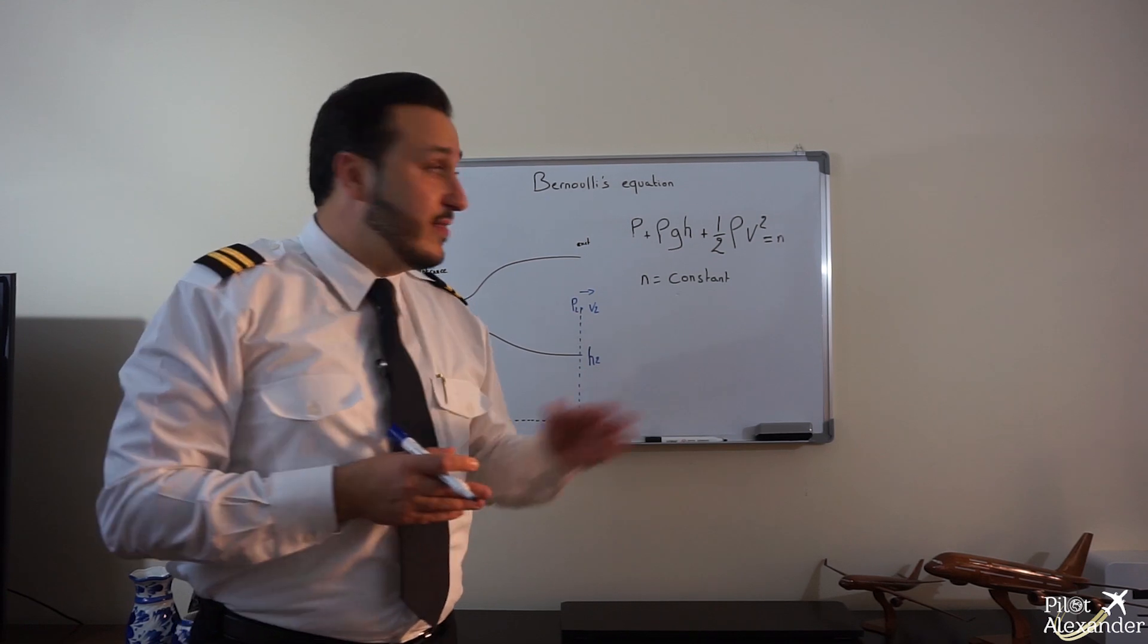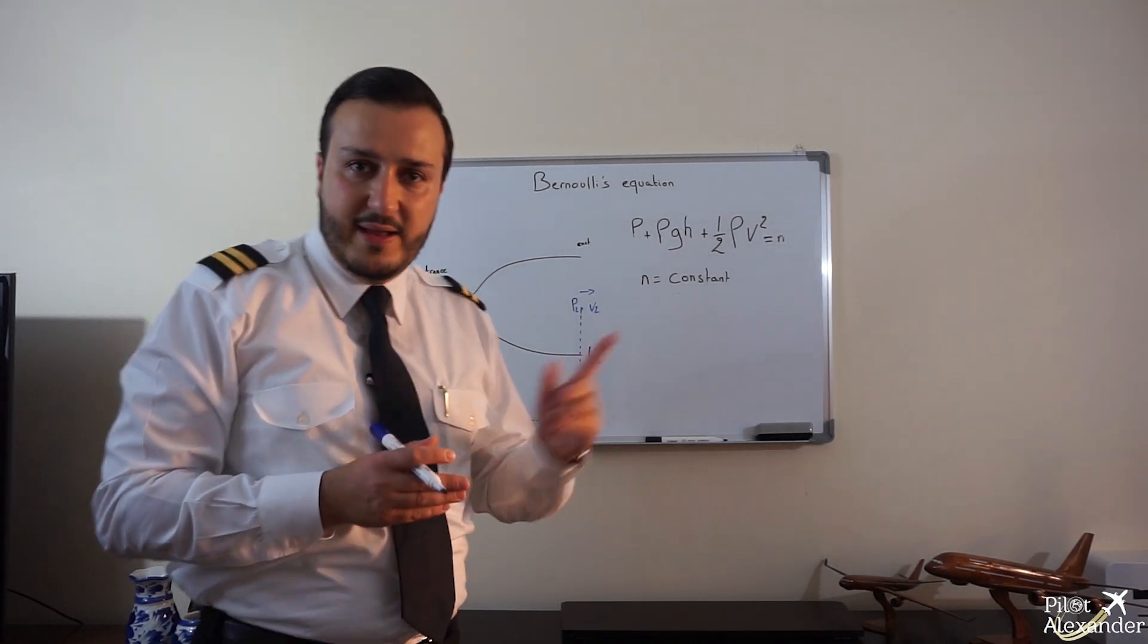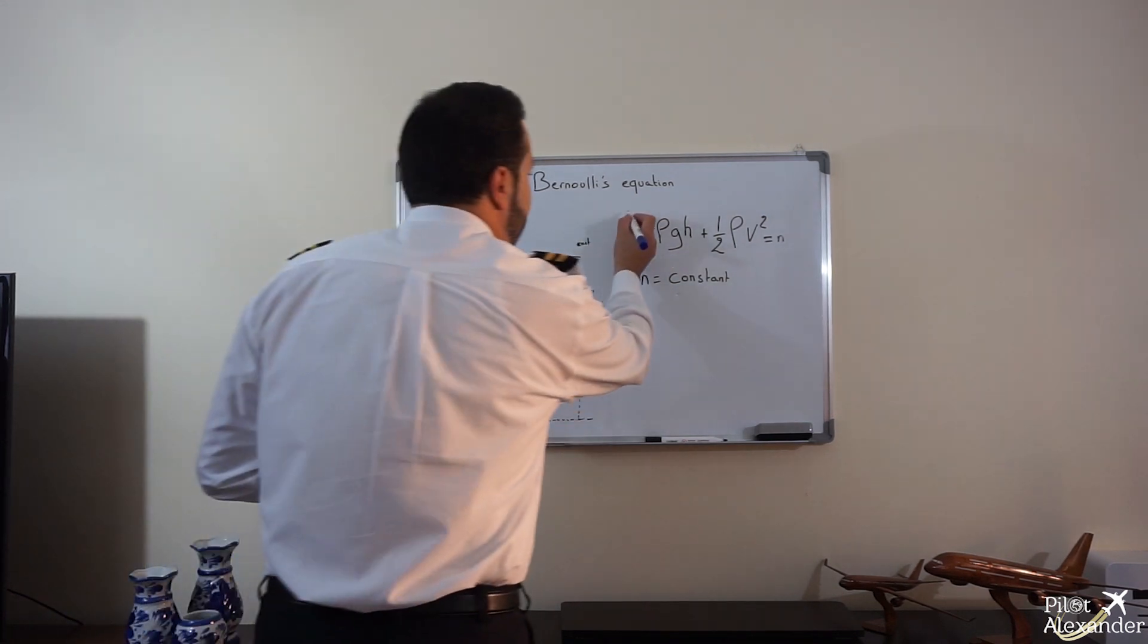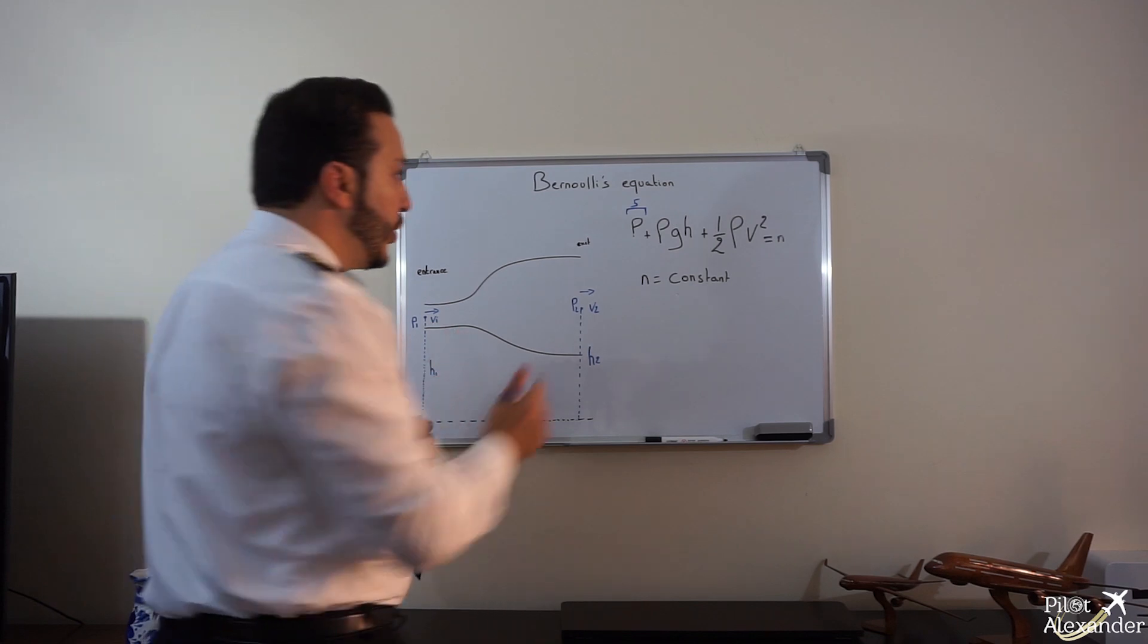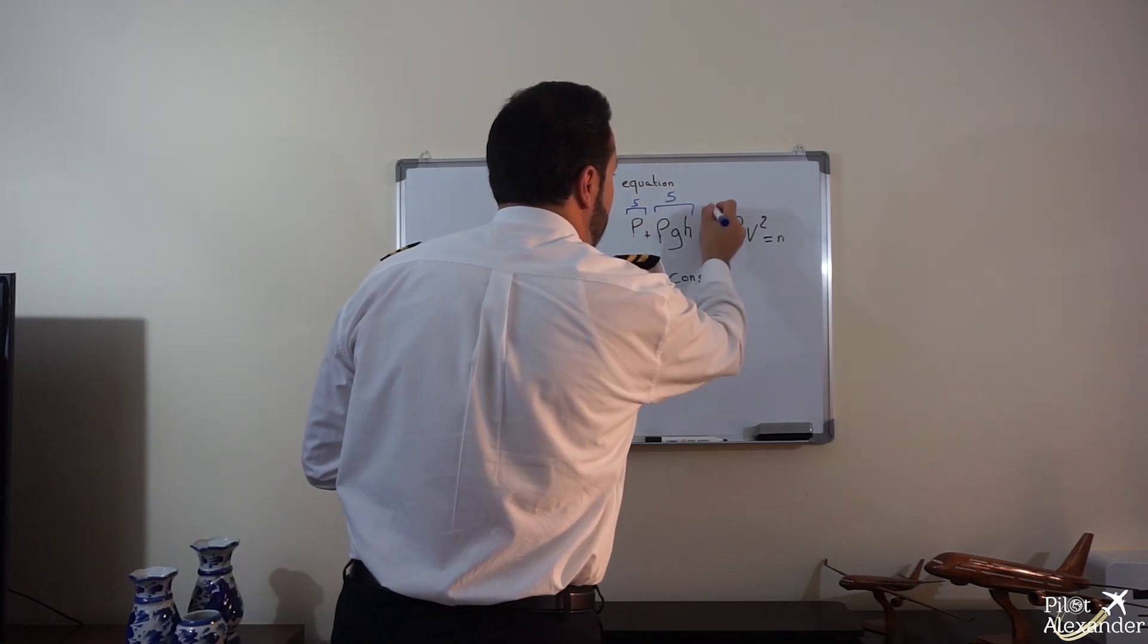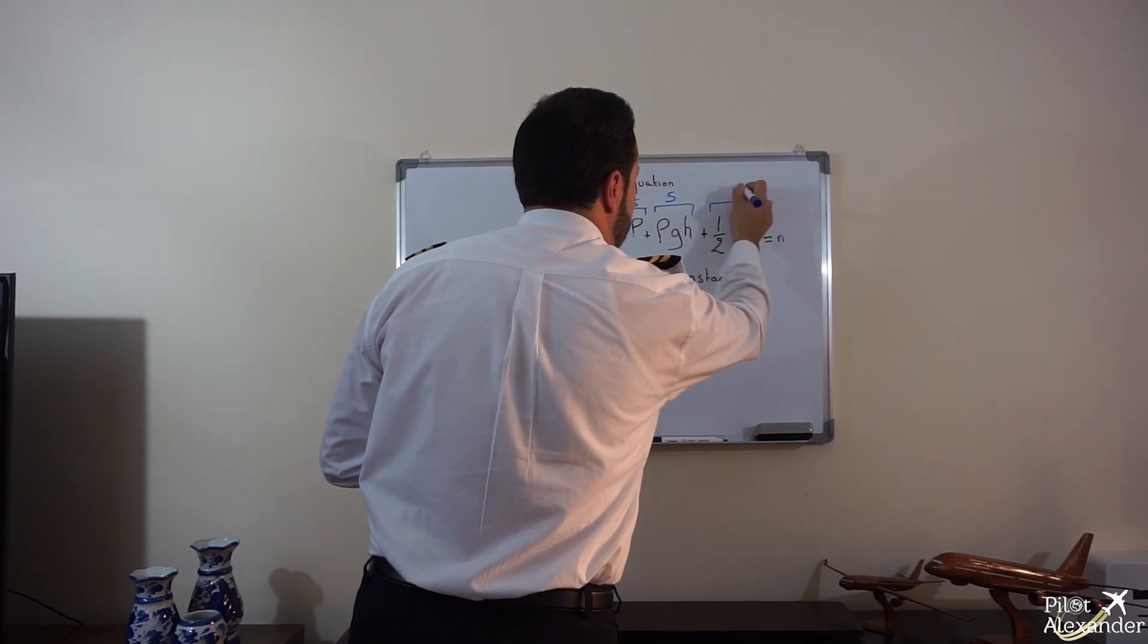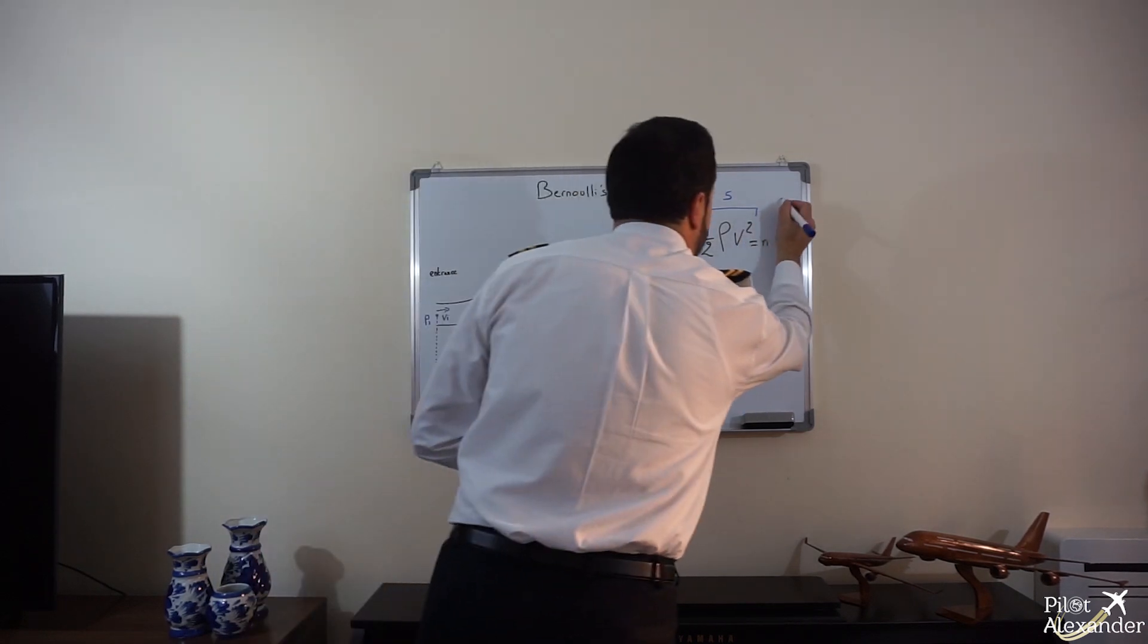Bernoulli is telling us that the result of this equation is always constant. What does that mean? Let's check that out. So imagine the first term is equal to five, which is the pressure. The second term, ρgh, is also equal to five, and the third term is equal to five. The result of this equation will be 15, of course.